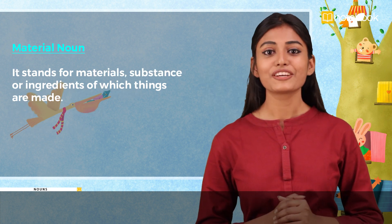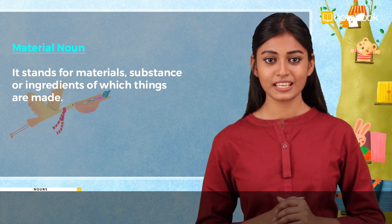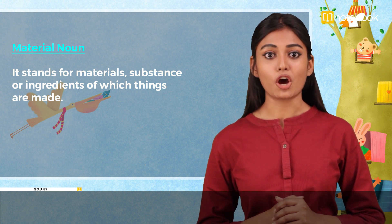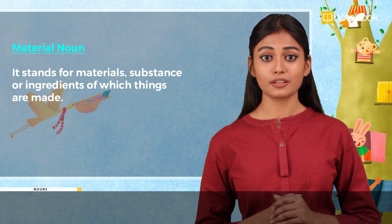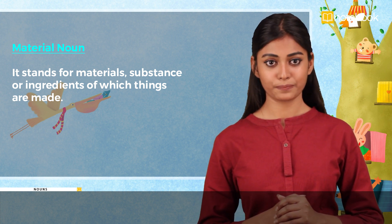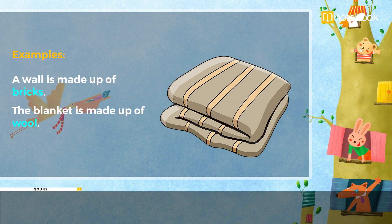Next, we have the material noun. It stands for materials, substances or ingredients of which things are made. Examples: a wall is made up of bricks. The blanket is made up of wool.